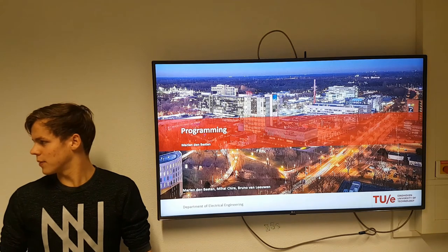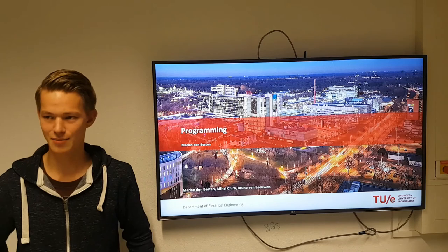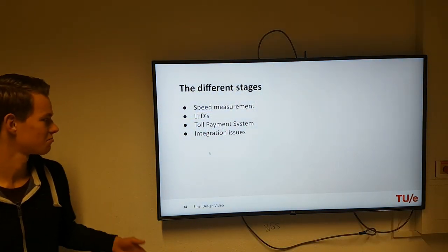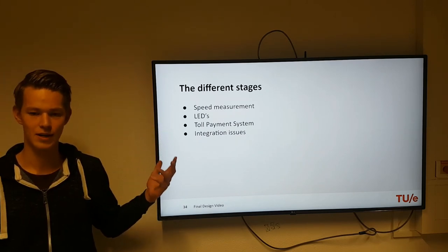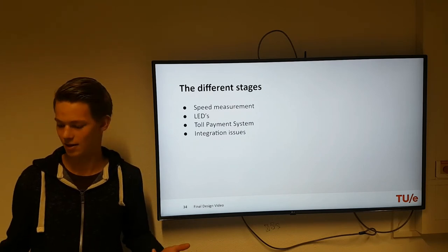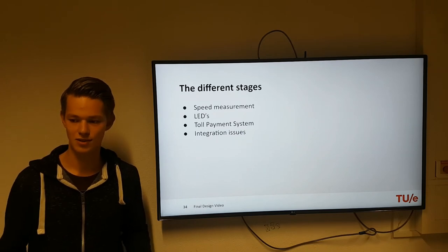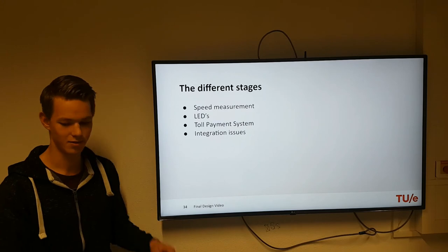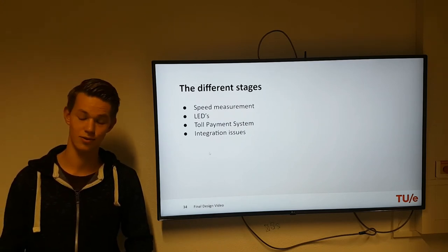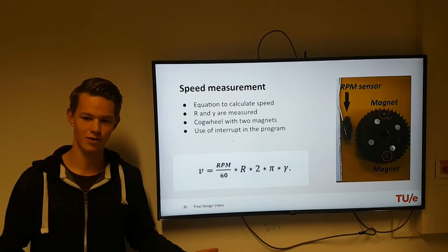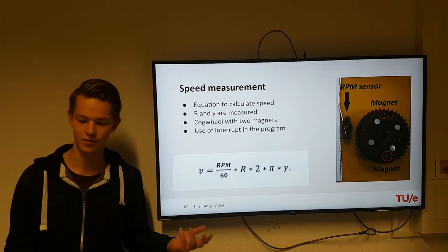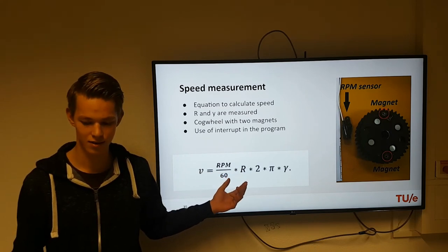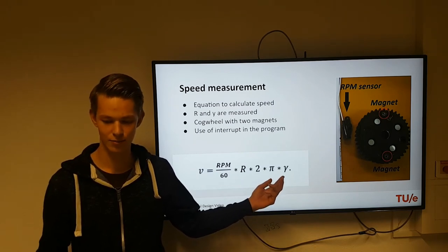Then we go to the programming part, presented by Maureen den Besten. The programming part consists of three different stages: first, the speed measurement; then, outputting the speed to the LEDs; and finally, implementing the toll payment system so the car can communicate with the trackside system. At the end we have to integrate all these parts into one program and upload it to the Arduino on the car. We need to do the speed measurement because we calculated the optimal speed from the three experiments. This is done by the formula: RPM divided by 60, multiplied by R (the wheel radius), multiplied by 2π, and multiplied by the gear ratio gamma.